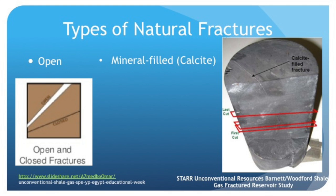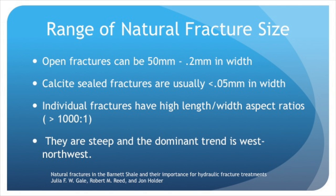A common view is that gas can only be produced when extensive networks of natural fractures exist. Natural fractures in shale come in all shapes and sizes. Open fractures can be as wide as 50mm, but those sealed with calcite are usually less than 0.05mm. They are usually very long and tortuous and have high length-to-width aspect ratios of usually greater than 1000 to 1. They are very steep and the dominant trend is west to northwest.